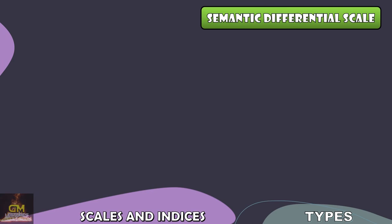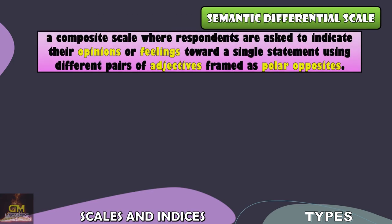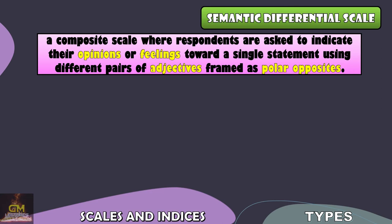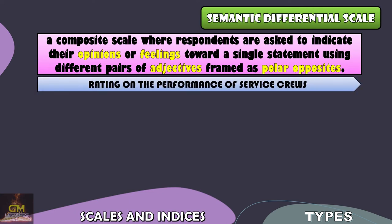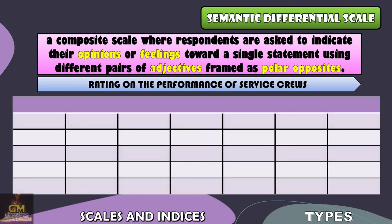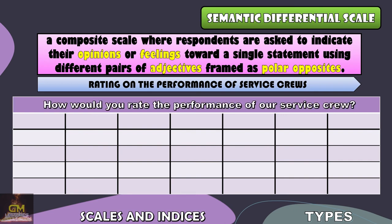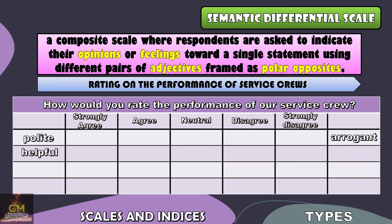And lastly, we have the Semantic Differential Scale. A semantic differential scale is a composite scale where respondents are asked to indicate their opinions or feelings toward a single statement using different pairs of adjectives framed as polar opposites. For example, we have the rating on the performance of service crews. A semantic differential scale would usually start with a single question such as: how would you rate the performance of our service crew? Based on the experience of the respondents, they will then give their answers — it could be towards the positive side or the negative side.